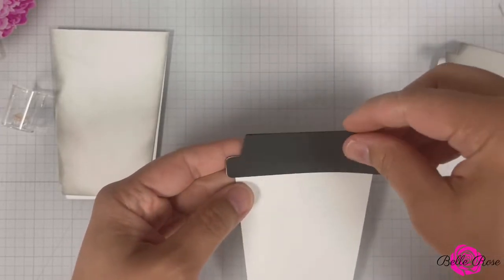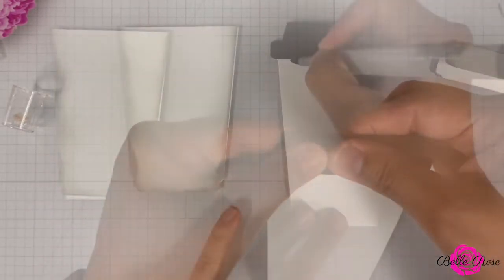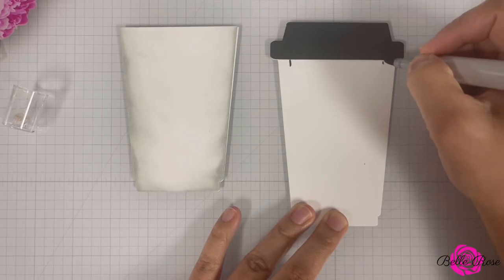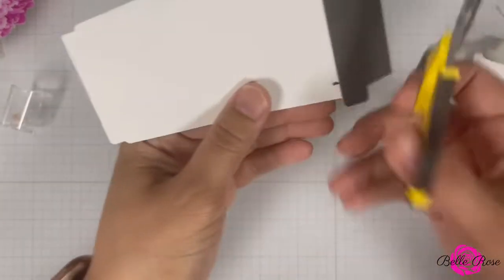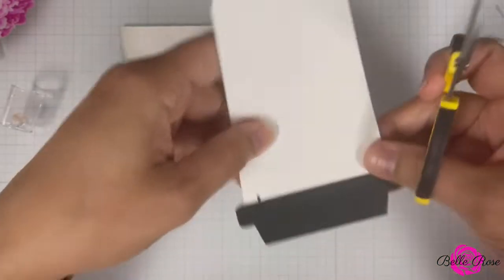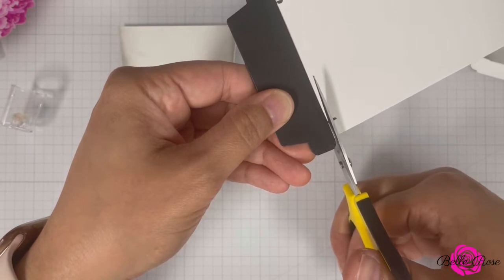Next, I'm going to adhere the front and the back of the coffee cup lid to the coffee cup insert. For the next step, I misplaced my pencil. So I grabbed the next best thing, a black Copic marker, and I'm just marking the spot where I need to trim off the edge of this coffee cup. That way, it can easily slide in and out of the coffee cup base.